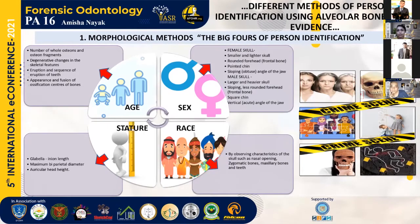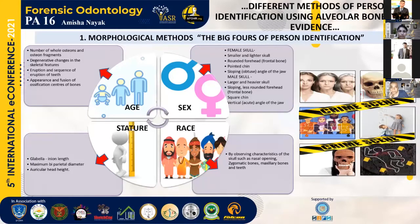The different methods of person identification using alveolar bone as evidence begin with the morphological method, which is the big four of person identification. The four morphological parameters are age, sex, race, and stature. Age is identified by the number of whole osteons and osteon fragments, degenerative changes in skeletal features, eruption and sequence of eruption of teeth, and appearance and fusion of ossification centers of the bones.